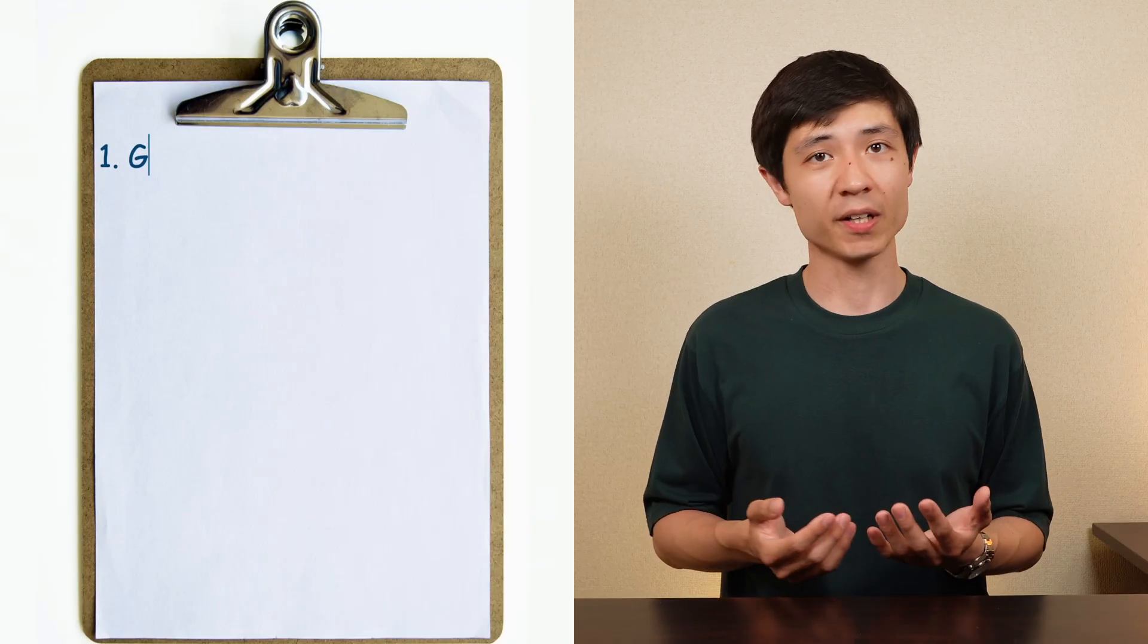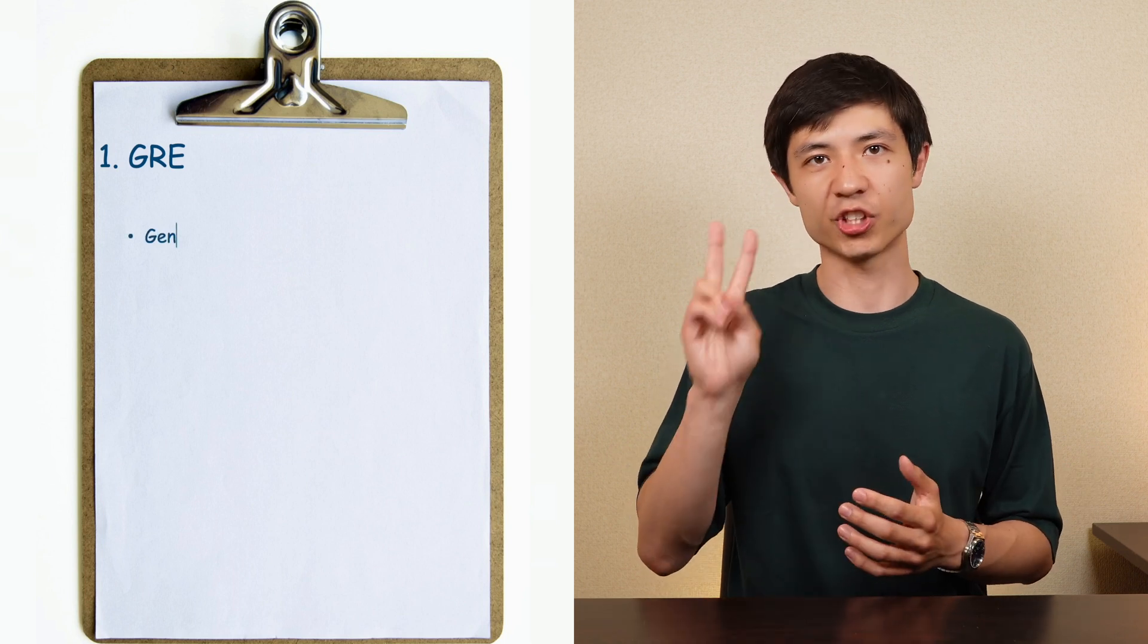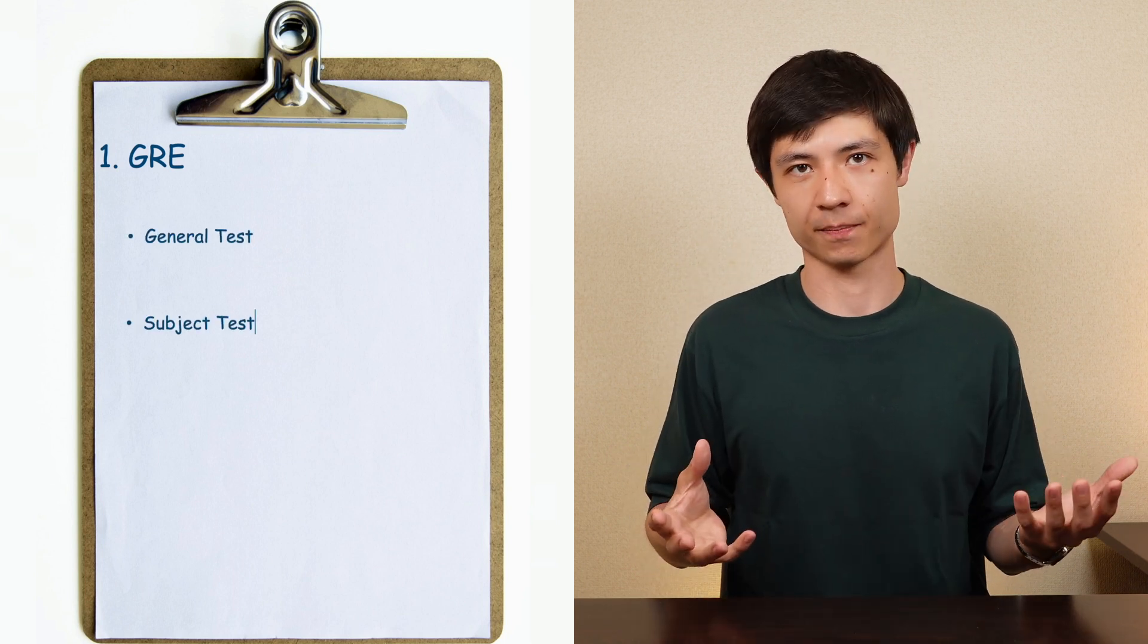Exams. As a mandatory step to get into any US university, you need to pass various exams. The first one is the GRE. Actually there's two GREs, the general test and the subject test. In a nutshell, the general test is composed of three sections.